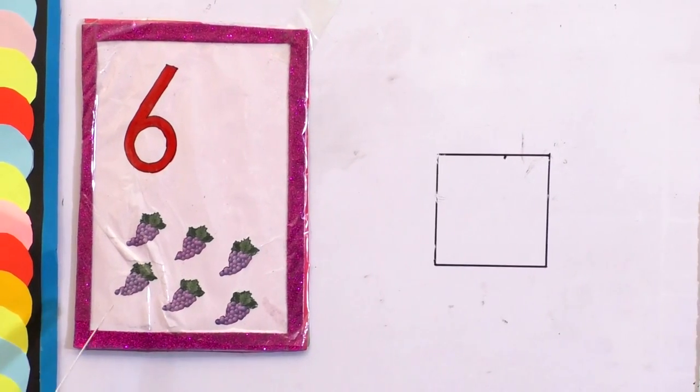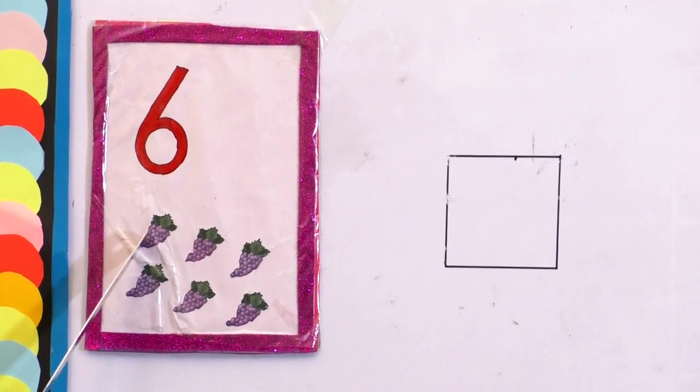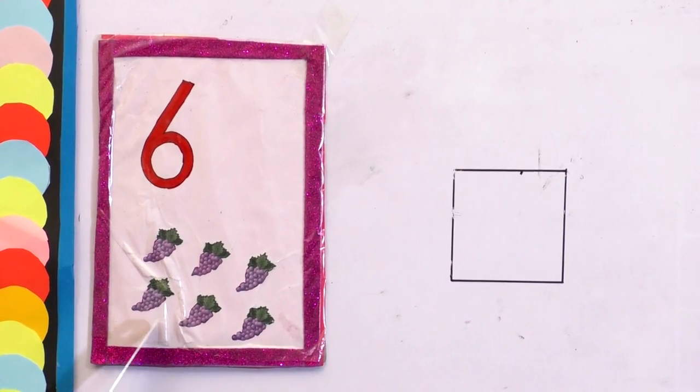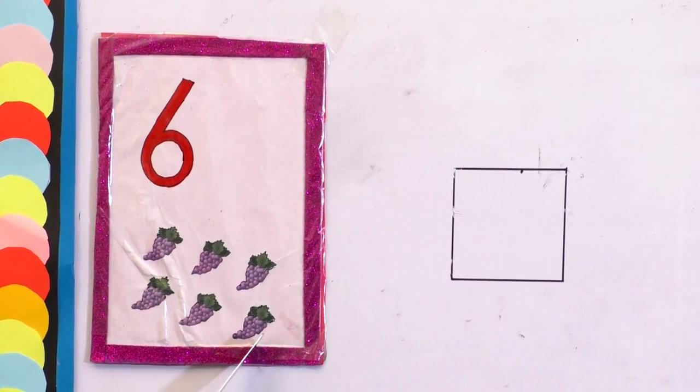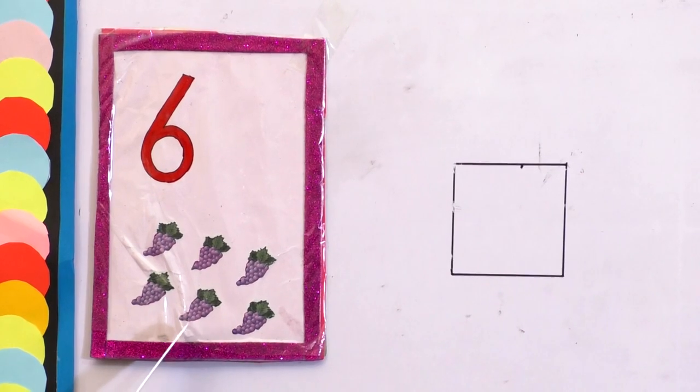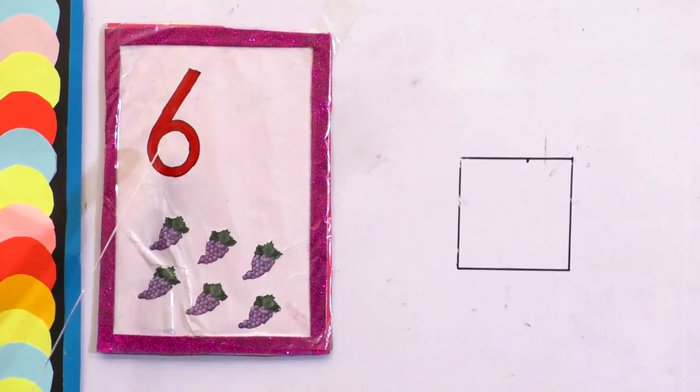How many grapes are here? Let's count. 1, 2, 3, 4, 5, 6. Yes, there are 6 grapes. 6 grapes.